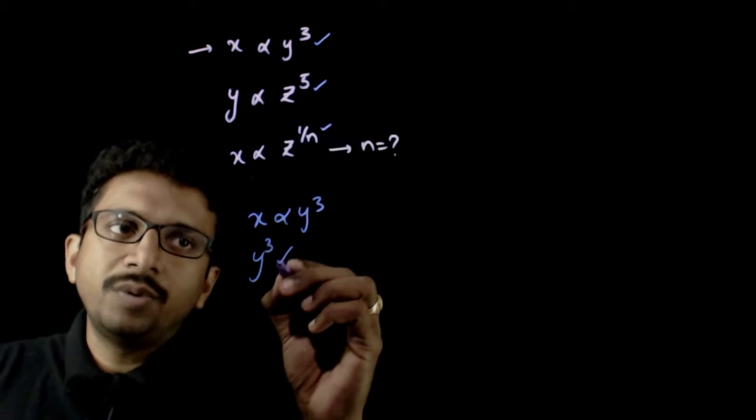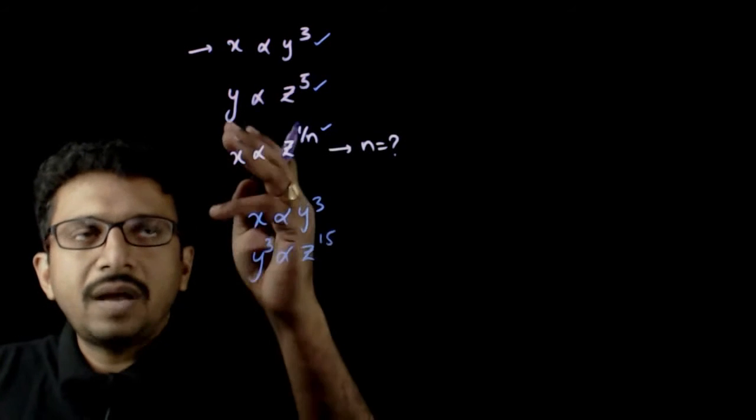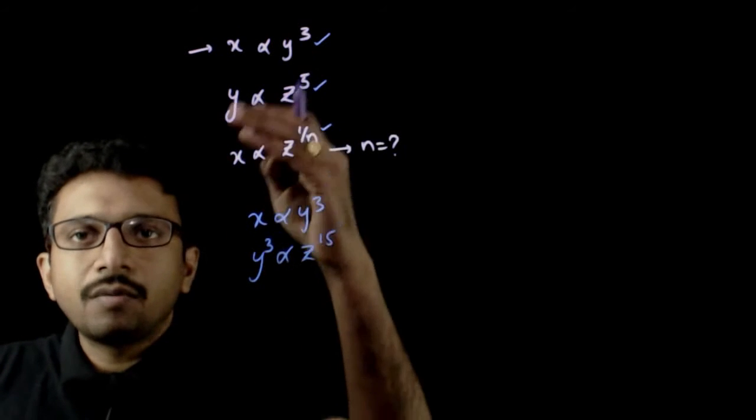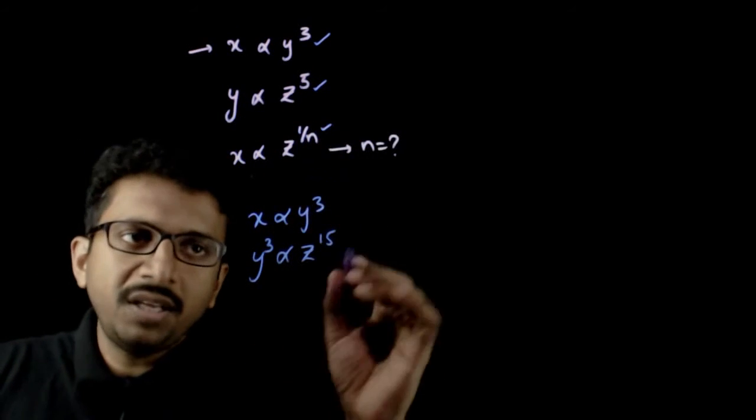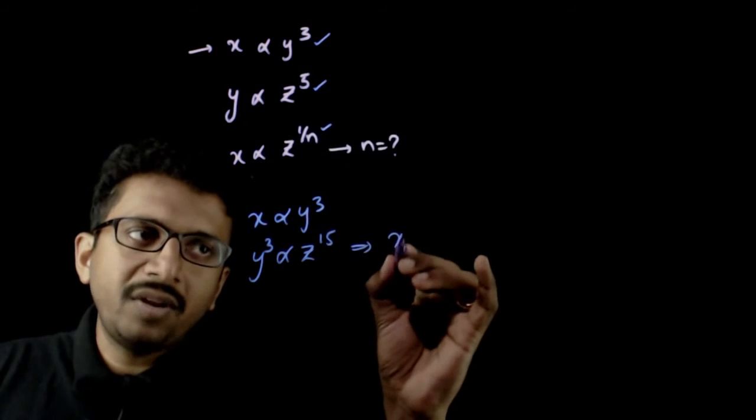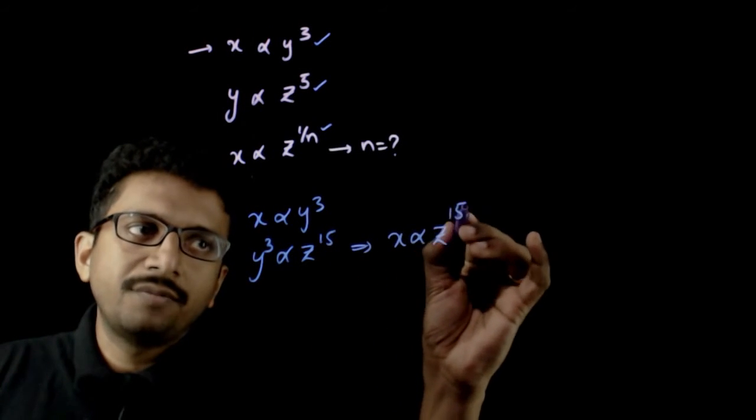So y cube is proportional to z power 15. If y is proportional to z power 5, y cube is proportional to z power 15. This implies effectively x is proportional to z power 15.